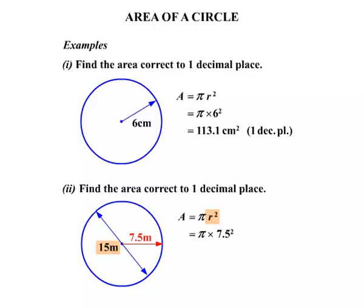When we write radius squared, we're going to multiply by 7.5². Now on the calculator, enter that in carefully. We get 176.7 m², rounded off to one decimal place.